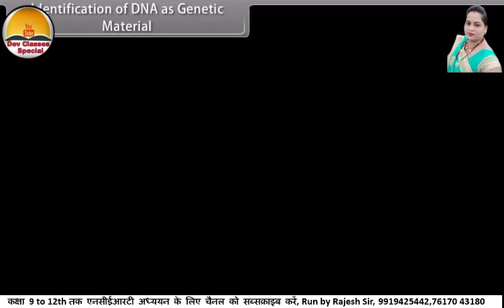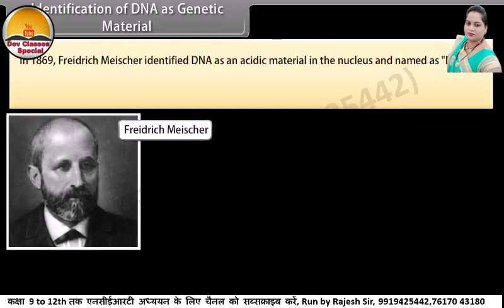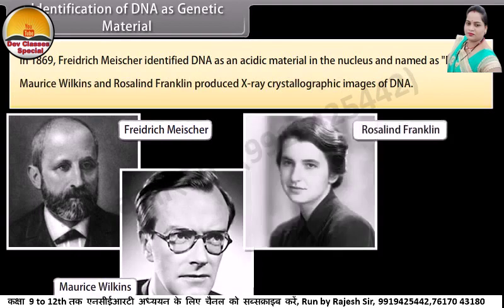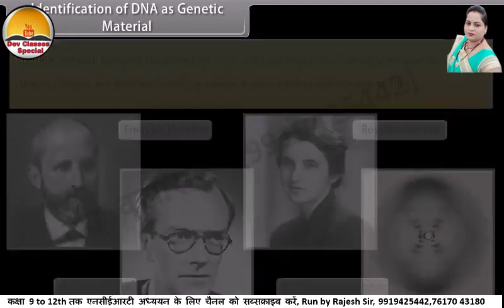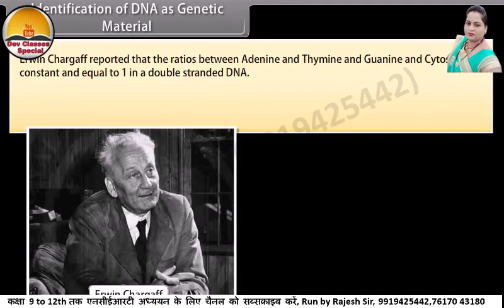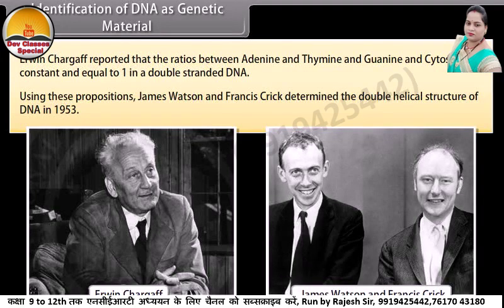Identification of DNA as genetic material. In 1869, Frederick Meischer identified DNA as an acidic material in the nucleus and named it nuclein. Morris Wilkins and Rosalind Franklin produced X-ray crystallographic images of DNA. Irwin Chargaff reported that the ratio between adenine and thymine and guanine and cytosine are constant and equal to 1 in a double-stranded DNA. Using these propositions, James Watson and Francis Crick determined the double helical structure of DNA in 1953.